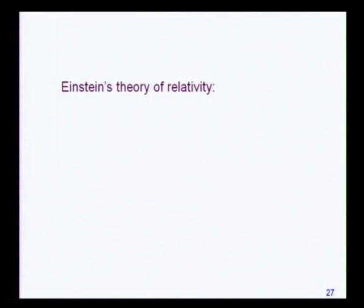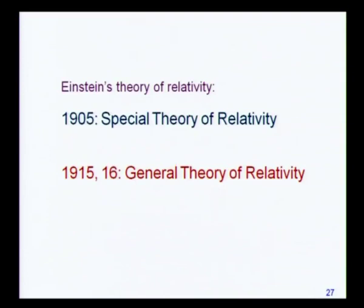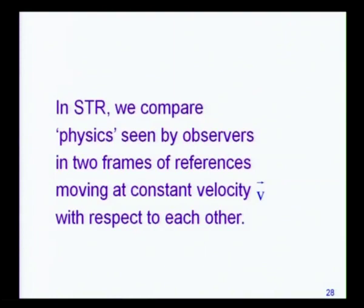This is what is called the special theory of relativity — relativity because you compare observations by two observers in motion relative to each other. It is special because it turns out to be a special case of another theory Einstein formulated later, in 1915–16, known as the general theory of relativity, which is well beyond the scope of this course, but I will make a few comments about it. We are going to focus on how to interpret the equations of physics as seen by two observers in motion with respect to each other at a constant velocity — both frames are inertial frames of reference.